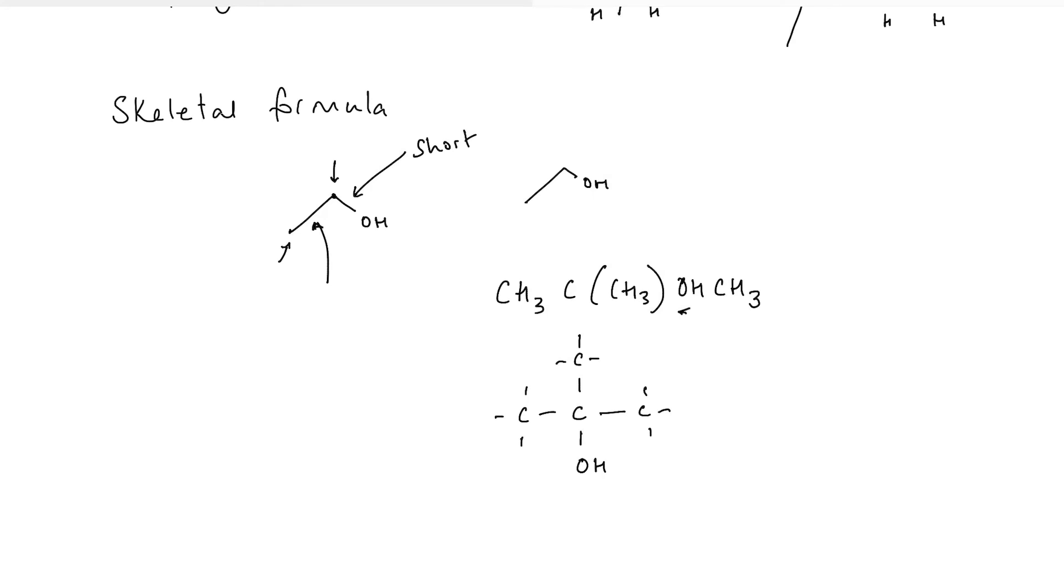In terms of skeletal formulae, my longest chain is one, two, three carbons. So one, two, three. I've got a branch. So there's the bond up to the branch. And that carbon is also bonded to an OH group. So there would be a shorter bond to the OH group.